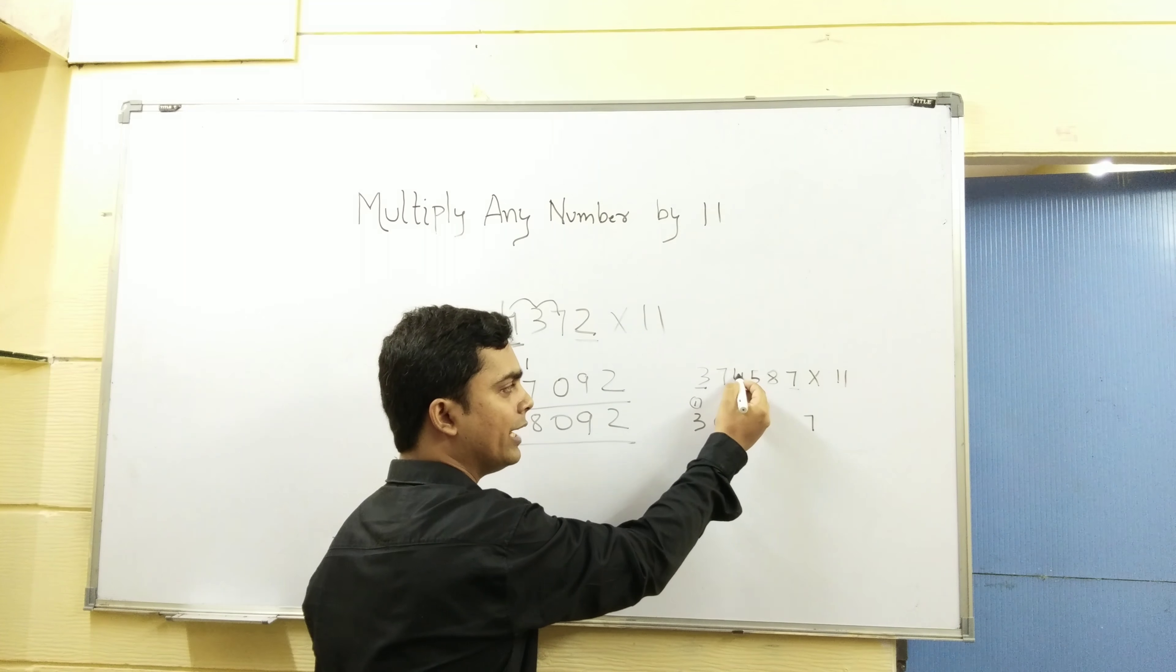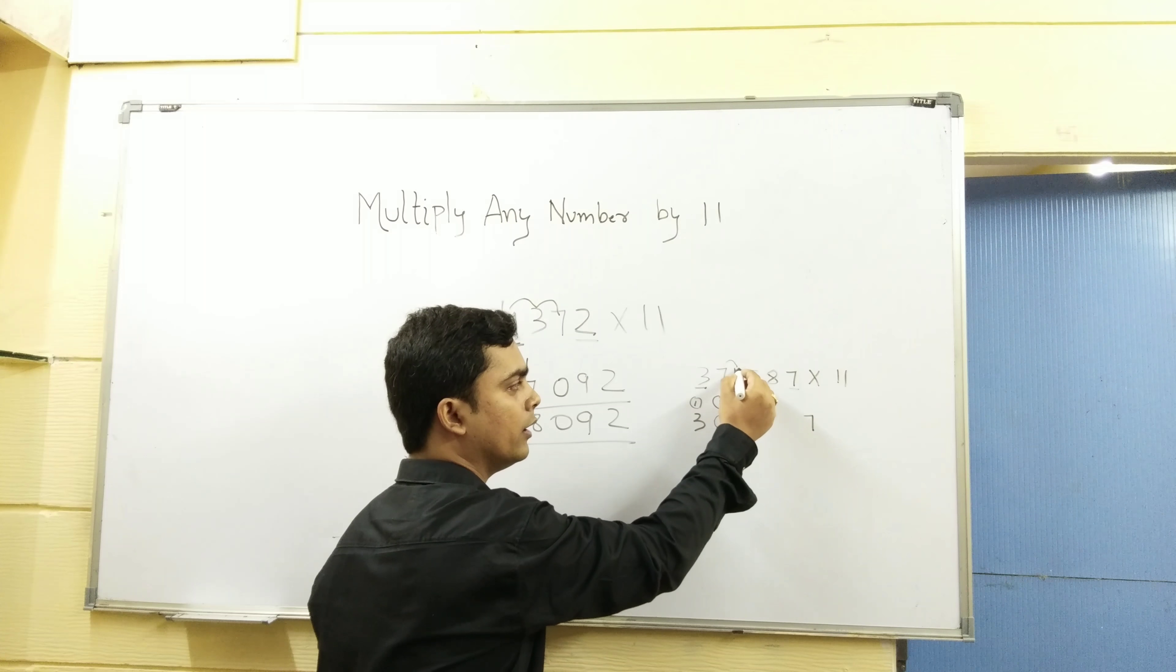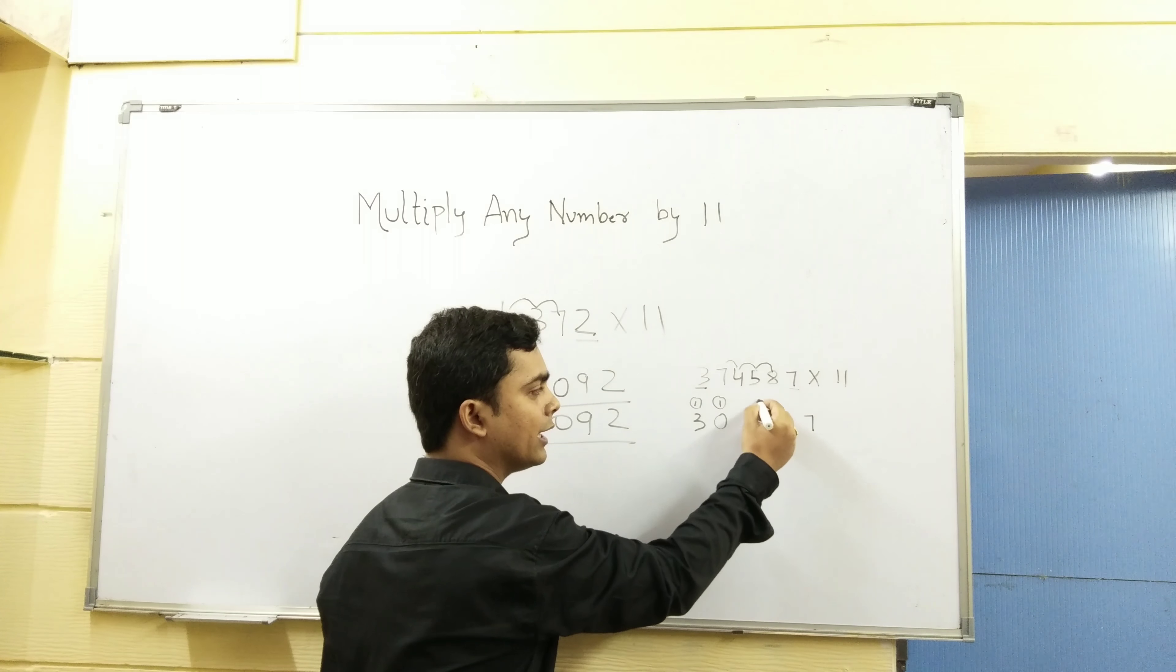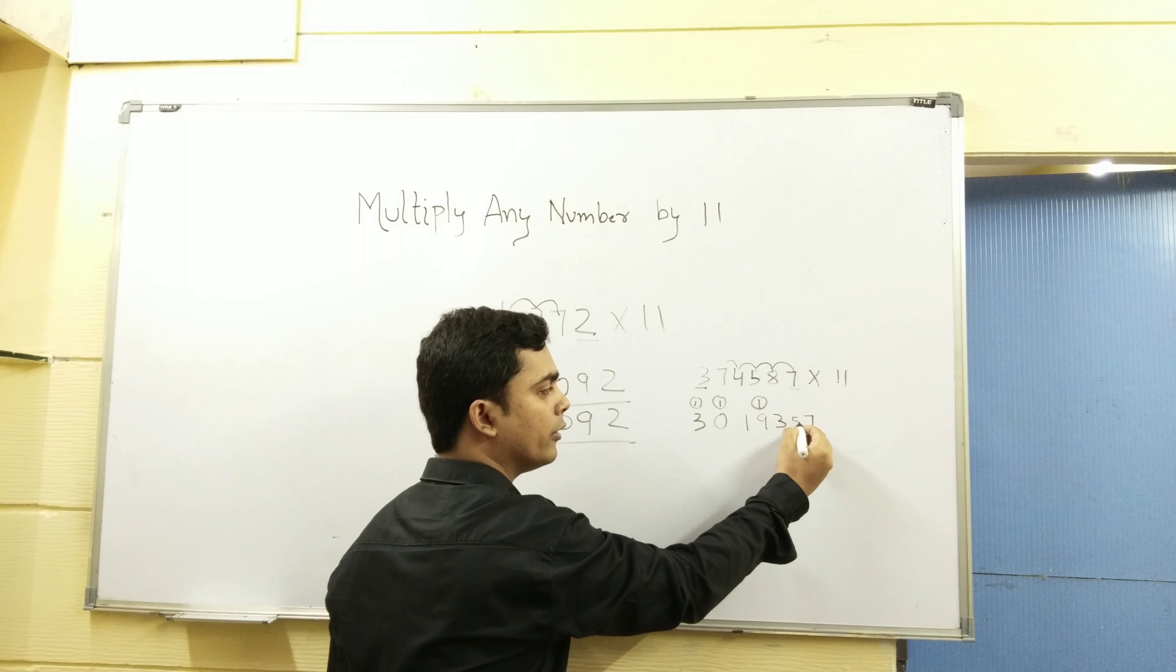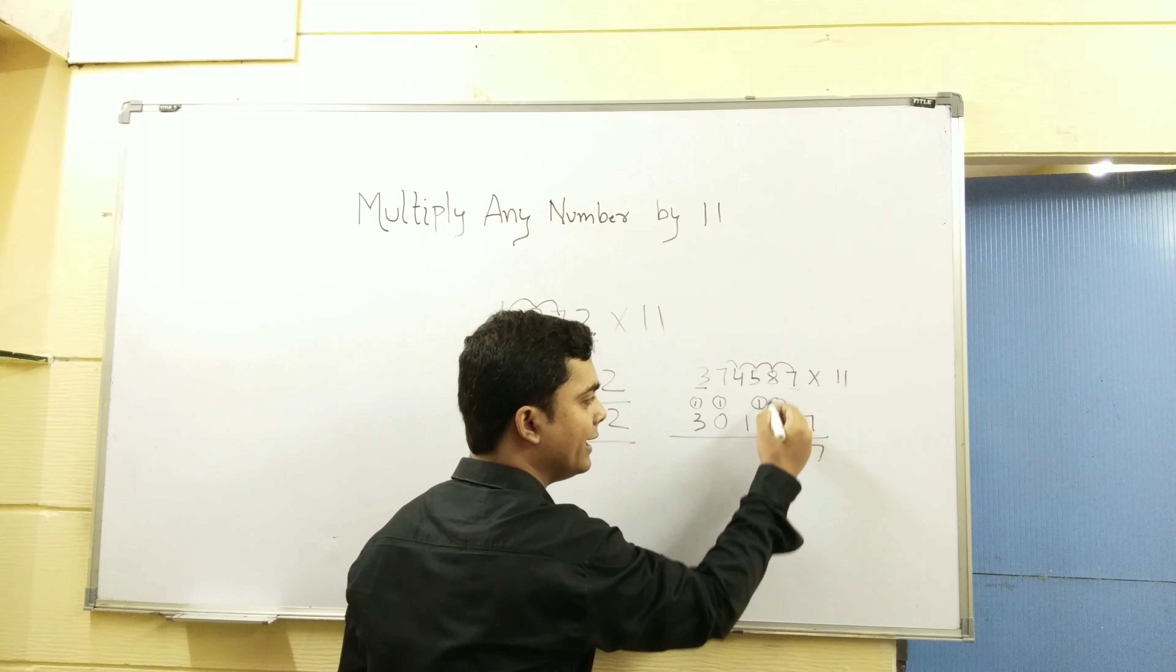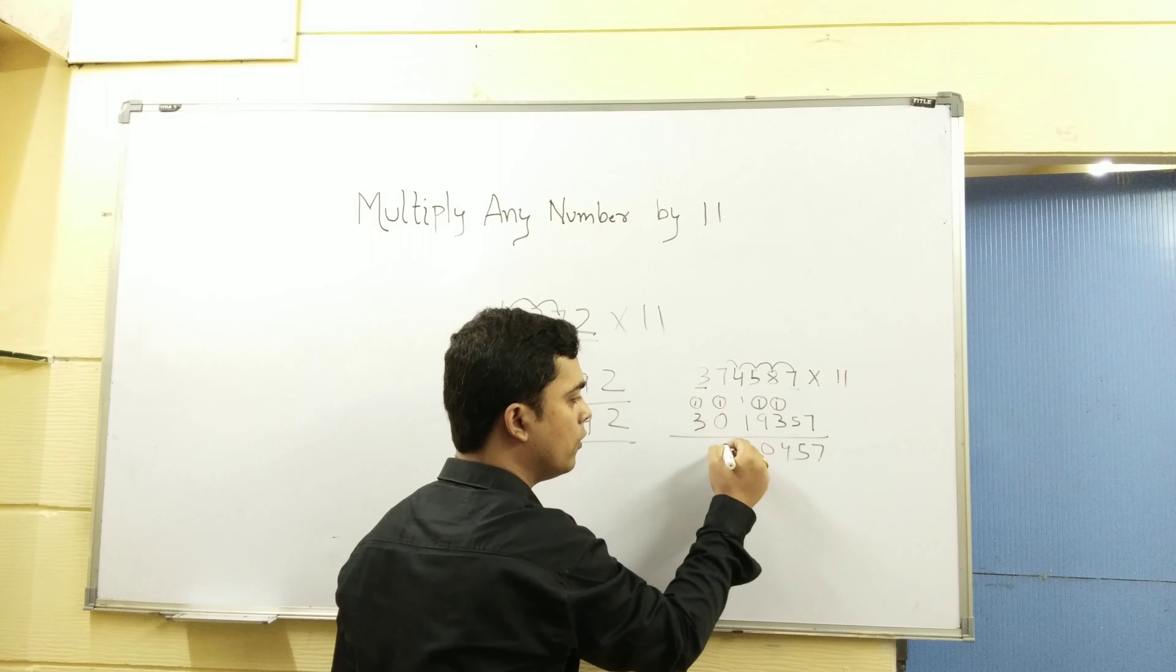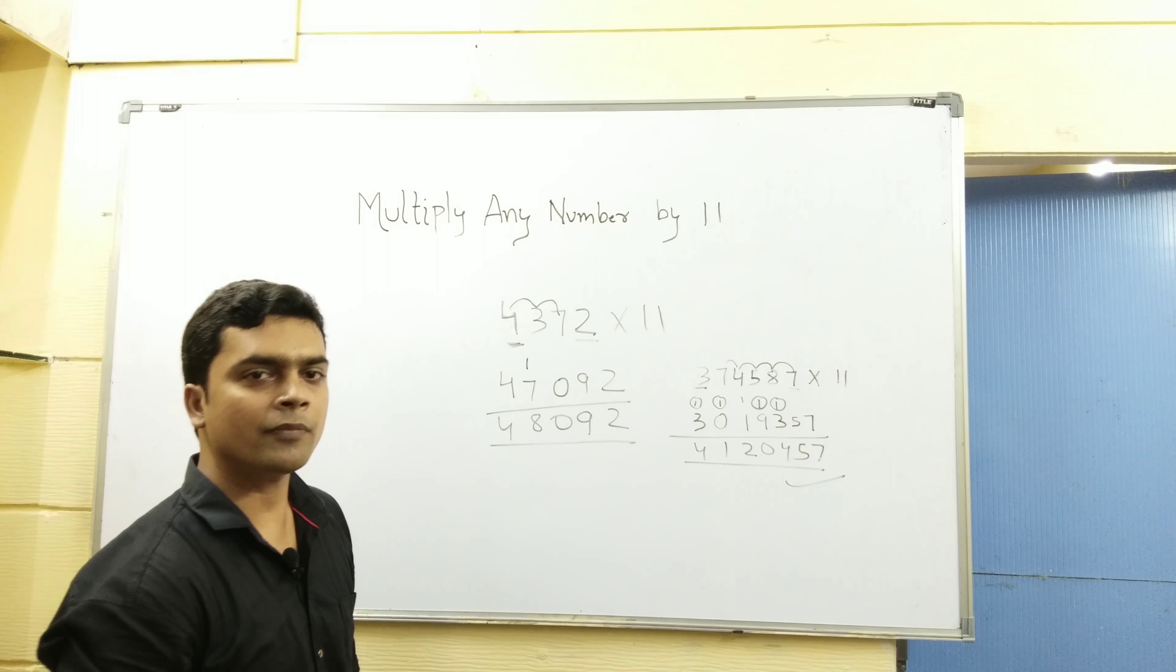4 plus 5, 9. 5 plus 8, 13. 3 carry. 8 plus 7, 15. 5 carry. 7, 5. 3 plus 1, 4. 9, 10. 2, 1, 4.